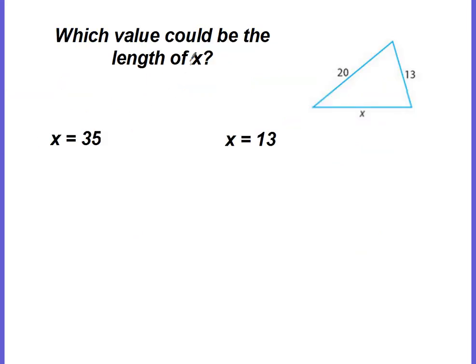And our last example, which value could be the length of x? So we've got two sides already. I want you to determine, should x be 35 to make a triangle? Or would it make a triangle with a side length of 13? Would it work for both? Would it work for neither? Pause the video. Come up with your answer. Come back and check. Okay, let's see how you did.